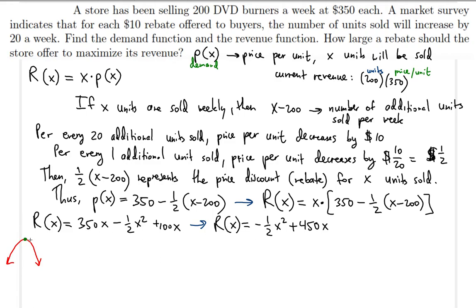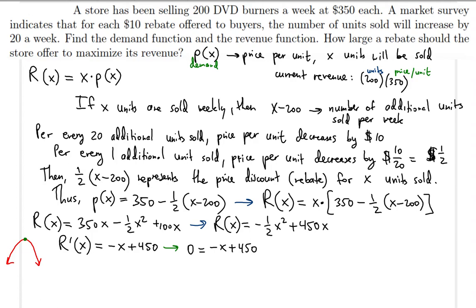At the vertex, the slope is zero — and the slope is the derivative. So we take the derivative R prime of X. Using the power rule, R prime of X equals negative X plus 450. Setting the derivative equal to zero: 0 equals negative X plus 450. Solving for X by adding X to both sides gives X equals 450. This is the number of units sold that produces the maximum revenue.